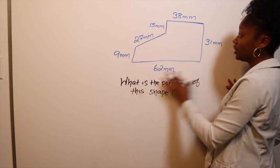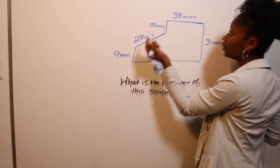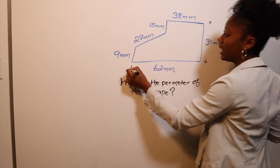What is the perimeter of this shape? Perimeter means the outside of the shape, so all you're going to do is just add each and every one of these. You're just adding them all up.